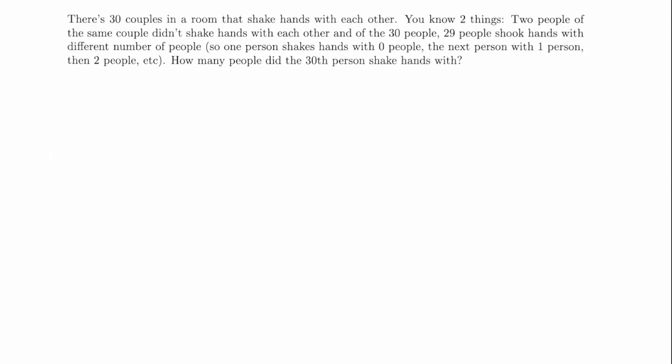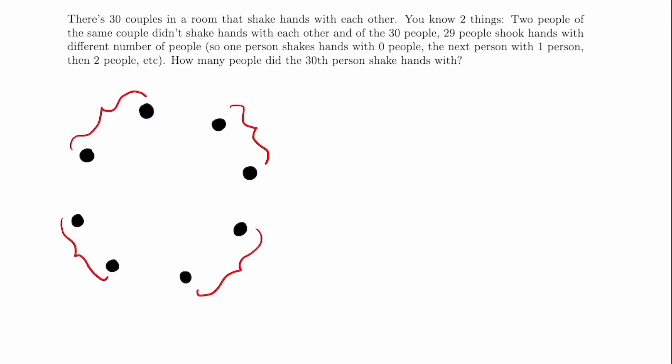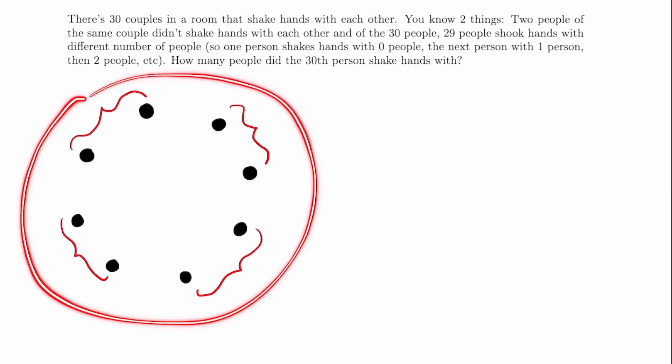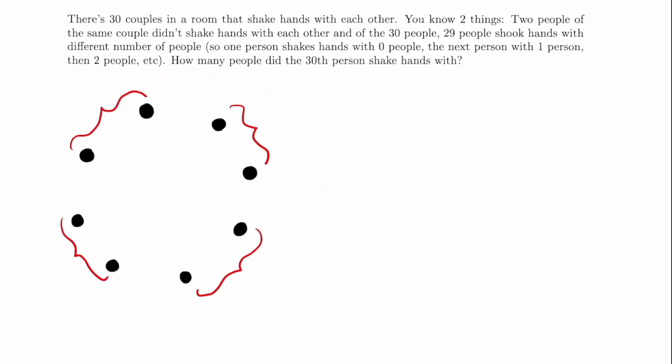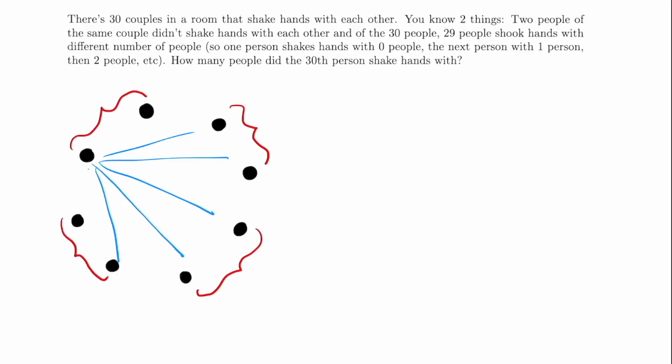If you want to give the problem a try, pause the video here and come back for the solution. So suppose these are 30 people — obviously there's only eight people here, but I'm just doing this to illustrate a point. And suppose that these are the couples. The first thing you can notice is that the maximum number of people anyone can shake hands with is 28, since you can't shake hands with your spouse, and you also can't shake hands with yourself. So the maximum number of people you can shake hands with is the number of people minus two, which in this case is 28.